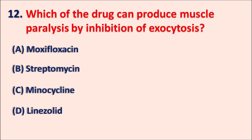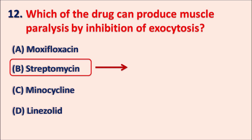Exocytosis is the process where neurotransmitters are released, and within the neuromuscular junction one of the important neurotransmitters is acetylcholine. In simple terms, which drug reduces acetylcholine release at the neuromuscular junction? The right answer is streptomycin. Streptomycin is an aminoglycoside antibiotic which can inhibit calcium-mediated exocytosis, thereby inhibiting acetylcholine release.